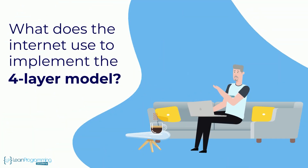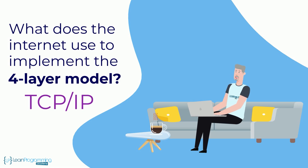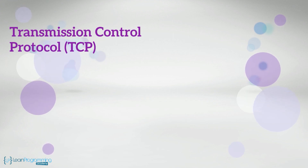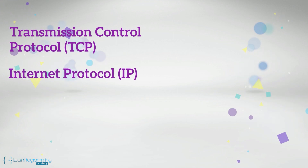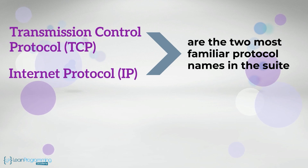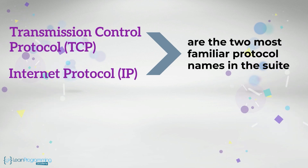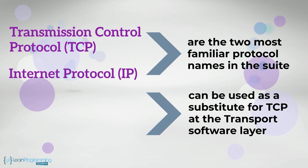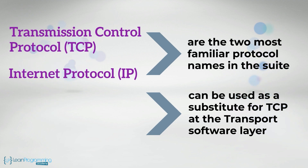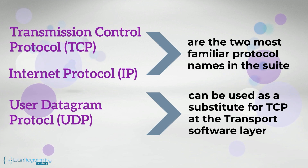So what does the internet use to implement the four-layer model? It uses the TCP/IP suite collection of protocol standards. Transmission Control Protocol (TCP) and Internet Protocol (IP) are the two most familiar protocol names in this suite. A third protocol that can be used as a substitute for TCP at the transport software layer is User Datagram Protocol (UDP).